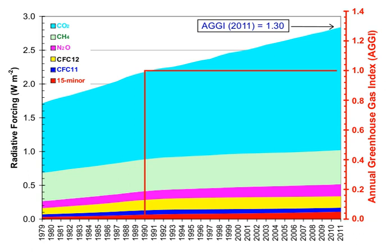The global warming potential (GWP) depends on both the efficiency of the molecule as a greenhouse gas and its atmospheric lifetime. GWP is measured relative to the same mass of CO2 and evaluated for a specific timescale. If a gas has a high radiative forcing but also a short lifetime, it will have a large GWP on a 20-year scale but a small one on a 100-year scale. Conversely, if a molecule has a longer atmospheric lifetime than CO2, its GWP will increase when a longer timescale is considered.